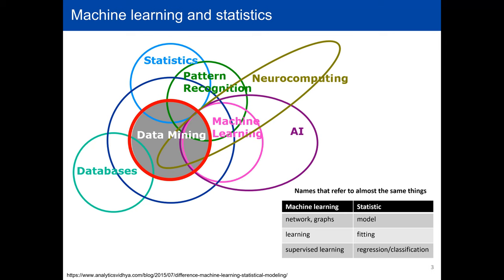There are so many fields now — you can say you're working in AI and you won't be wrong, since machine learning is part of AI. Specifically in materials, when you do machine learning and statistics, you'll also be doing a lot of data mining, analyzing data, and all your lab decisions will be data-driven.